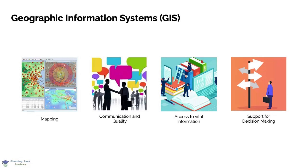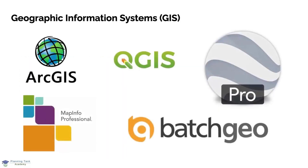Geographic Information System is one of the latest and most advanced systems to help organize spatial data. Knowledge of GIS software helps a planner to better represent their ideas in print as well as maximize their opportunities for analysis and understanding. Some of the available software in this area are ArcMap, QGIS, BatchGeo, MapInfo Pro, Google Earth, and so on, in which ArcGIS and QGIS are widely used in the field of planning in India.